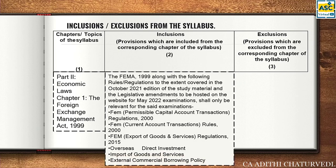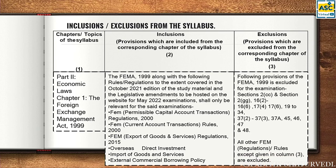Moving ahead to FEMA — again, whatever is included is not for the first time; this has been notified earlier. External commercial borrowings, overseas direct investments, import of goods and services regulations are already in your book because this notification had already come. In FEMA, certain sections are excluded — again nothing new. Section 2(cc) and 2(gg) are obviously definitions. For your knowledge: 2(cc) is authorized officer and 2(gg) is competent authority.